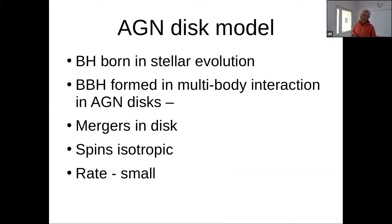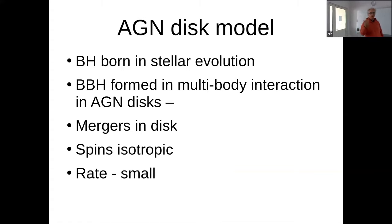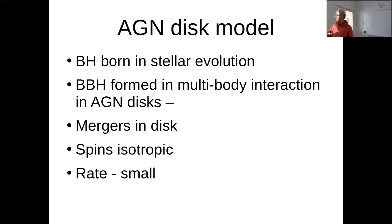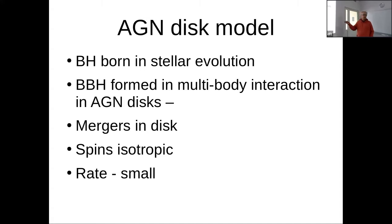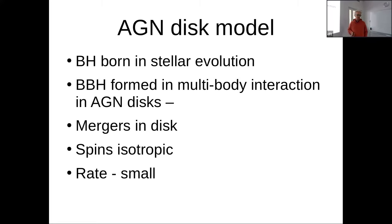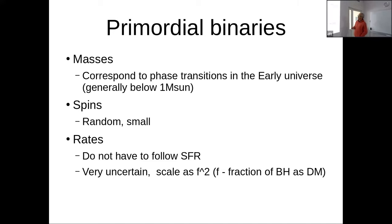In the AGN disc model, black holes are born in stellar evolution but binary black holes form through multi-body interactions in AGN discs, with mergers taking place in the disc. Spins are expected to be isotropic. However, the fraction of total stellar matter contained in AGN discs is only about 10^-4 to 10^-5, so expected rates are very small — perhaps 1% of what is observed. This model was sparked by one specific event followed by an optical flare after 35 days at the same location.